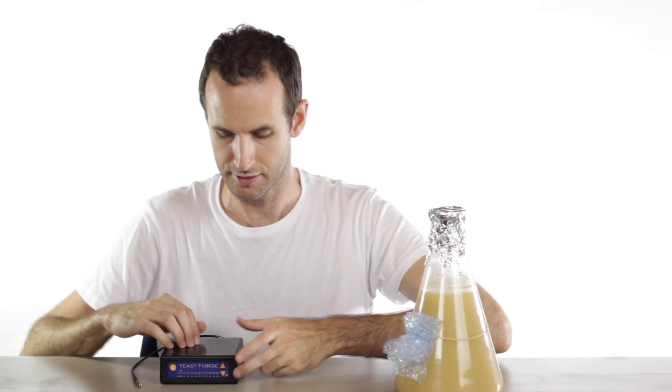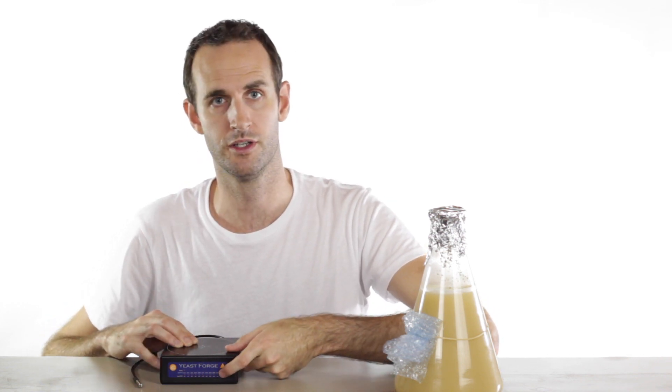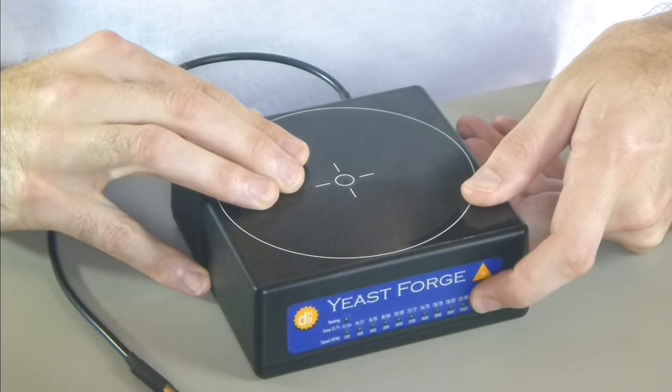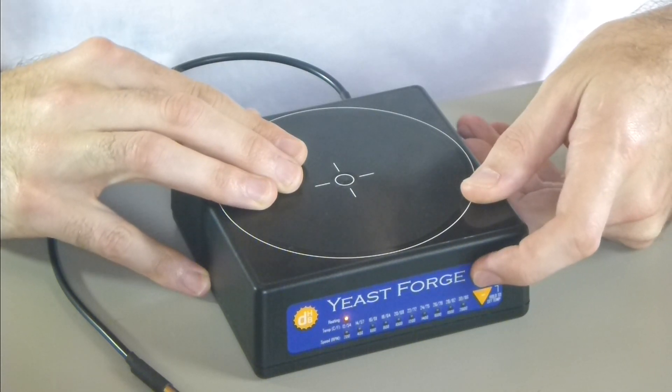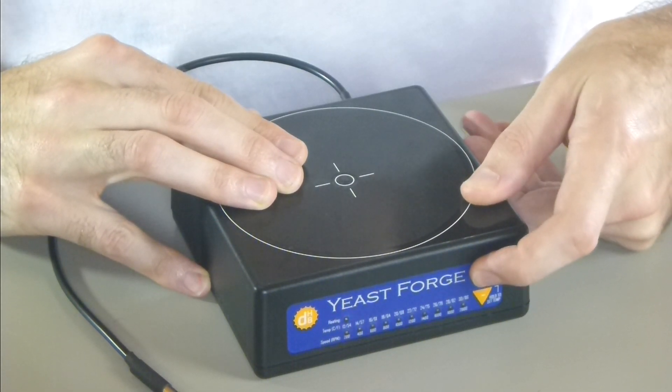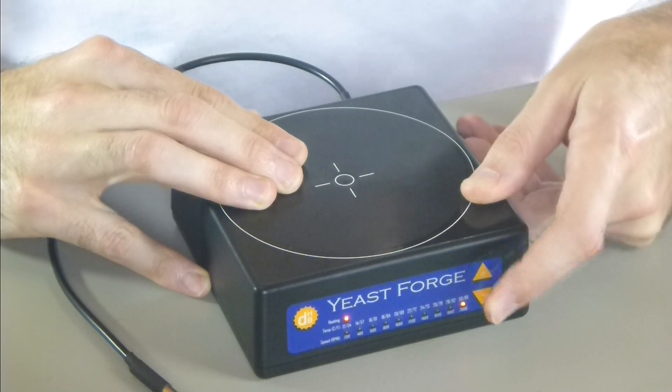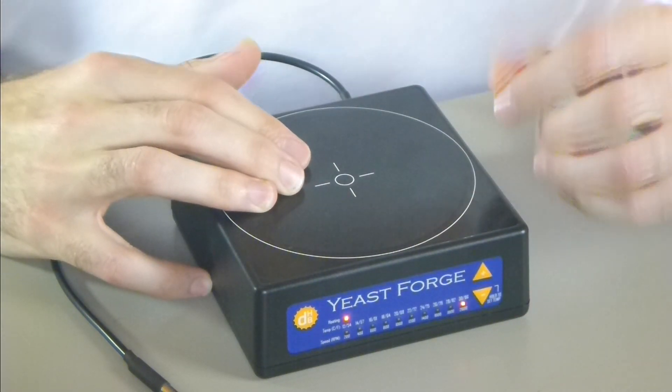So to set the desired temperature, you simply hold the down button when it's turned off. It beeps twice so you know you're in temperature set mode. And then you can set the temperature anywhere from 12 degrees Celsius to 30 degrees Celsius. And that's also written there in Fahrenheit as well.